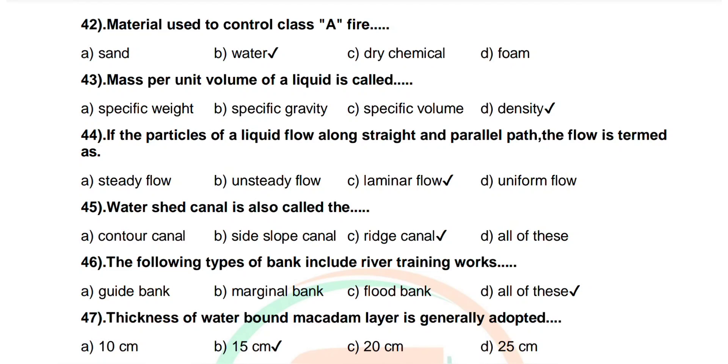Question number 46: The following types of bank include river training works. Options are guide bank, marginal bank, flood bank, all of these. Correct answer: all of these.